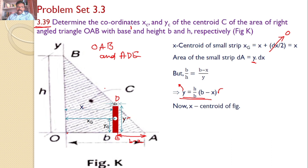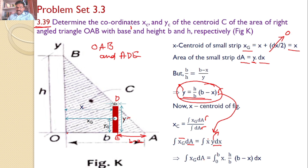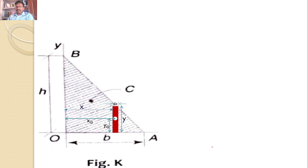The X coordinate of the centroid for the right angle triangle OAB, XC, equals integral of XG dA divided by integral of dA. Here XG is X and dA equals Y DX. Let us calculate the numerator and denominator individually. The numerator is integral XG dA where XG is X and dA is Y into DX. Substituting Y equals H/B into (B minus X), and noting X limits vary from 0 to B, the integral becomes integral from 0 to B of X into H/B into (B minus X) DX.